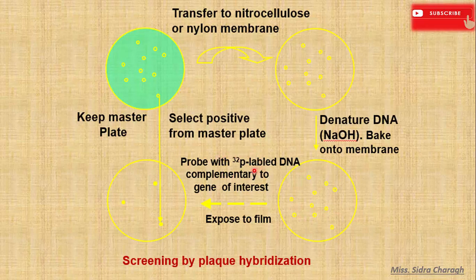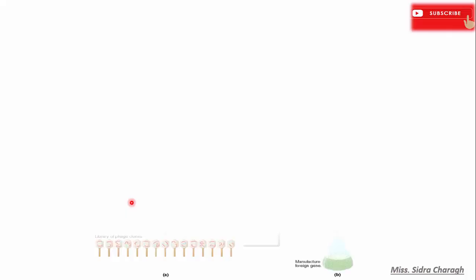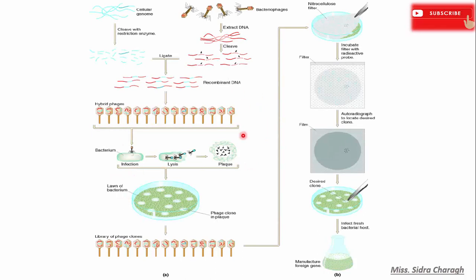We add P32 radioactive labeled probe that is complementary to the gene of interest and then expose it to the film. When we expose it to the film, we see that a spot is present, which indicates our desired gene of interest. This figure describes the complete scenario behind this screening.